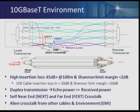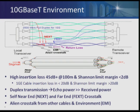10G Base-T is designed to run over 55 meters of Cat 5 or 100 meters of Cat 6 or Cat 7. We're running 2.5 gigabits per second full duplex over each pair, and transmission is done receiving and transmitting on the same line. So there are significant echo challenges. Four pairs of wire, even though the twist rates are different, you still get significant near-end crosstalk and far-end crosstalk noise from the adjacent pairs.